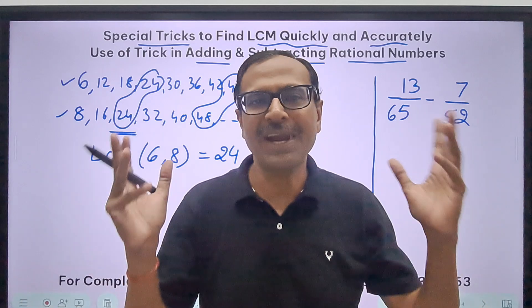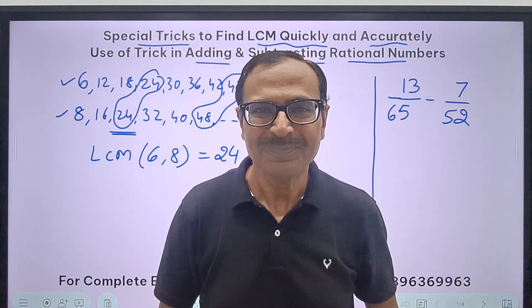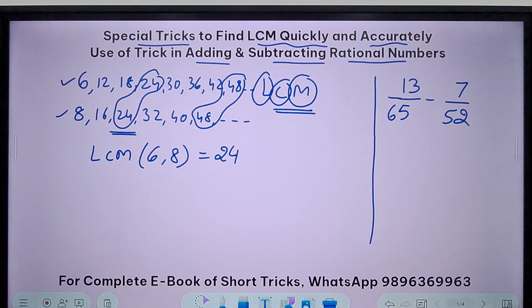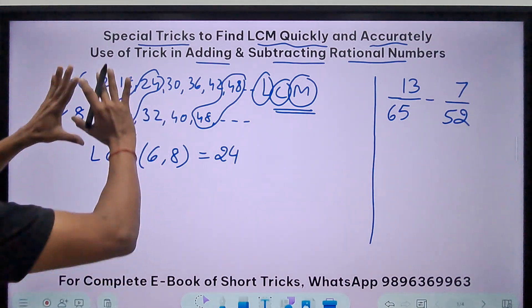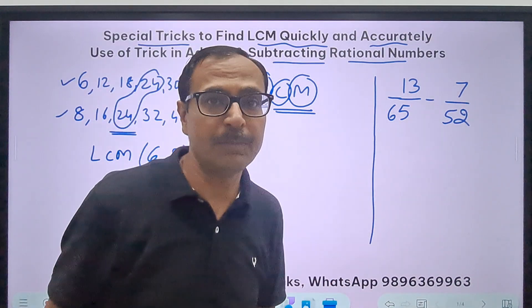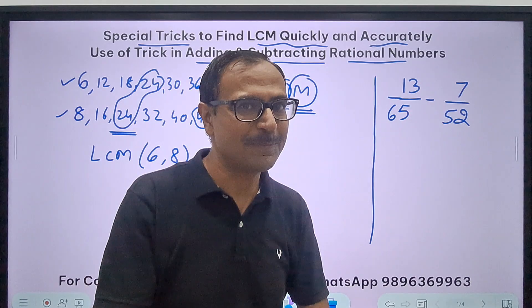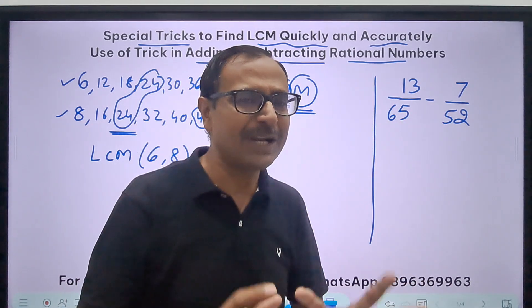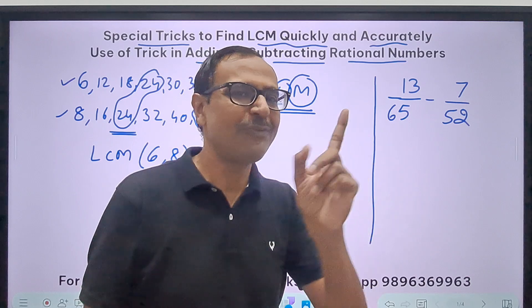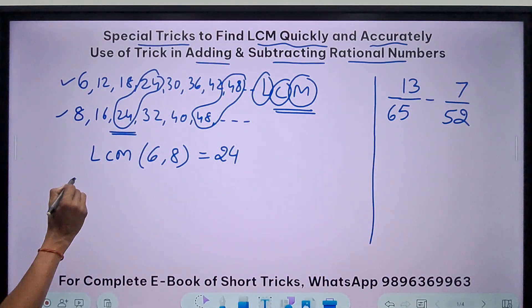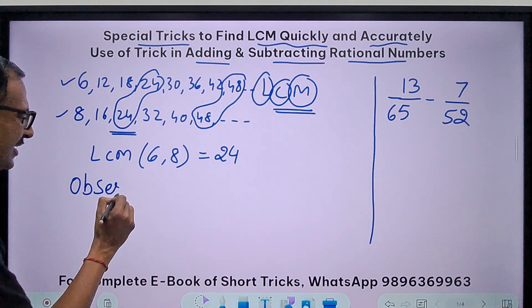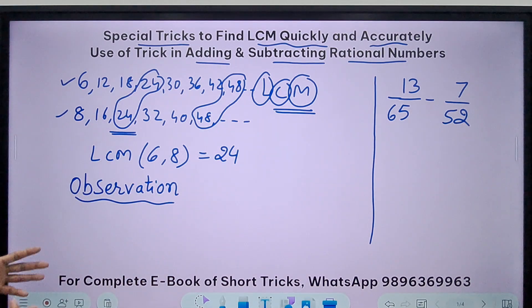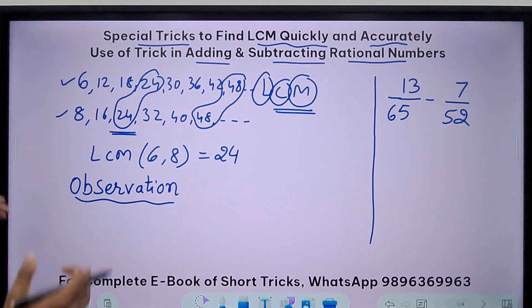If you get confused in these concepts, you have crammed mathematics rather than learned it. Once this concept is clear, we can work on finding the LCM for big numbers — that's where the problem is — and the problem will be resolved very quickly if you have very good observation.